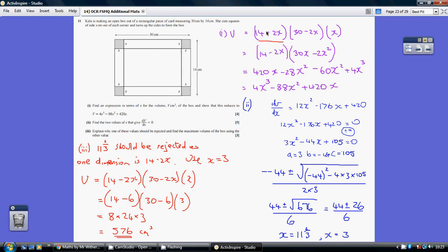To work out the volume of a cuboid you multiply the three lengths together. So we've also got to multiply it by the height of the box which once this is folded up will be x.